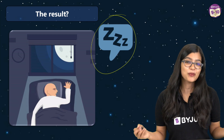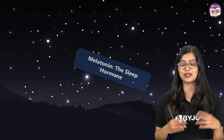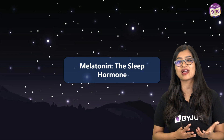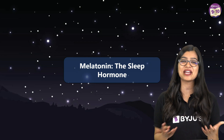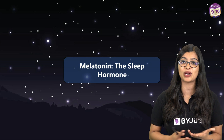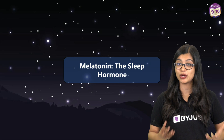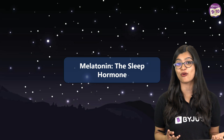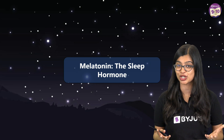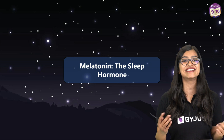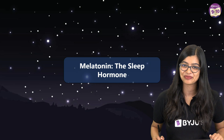So now you know the answer to the question — why is melatonin known as the sleep hormone? Because it regulates your 24-hour biological clock, or your circadian rhythm.